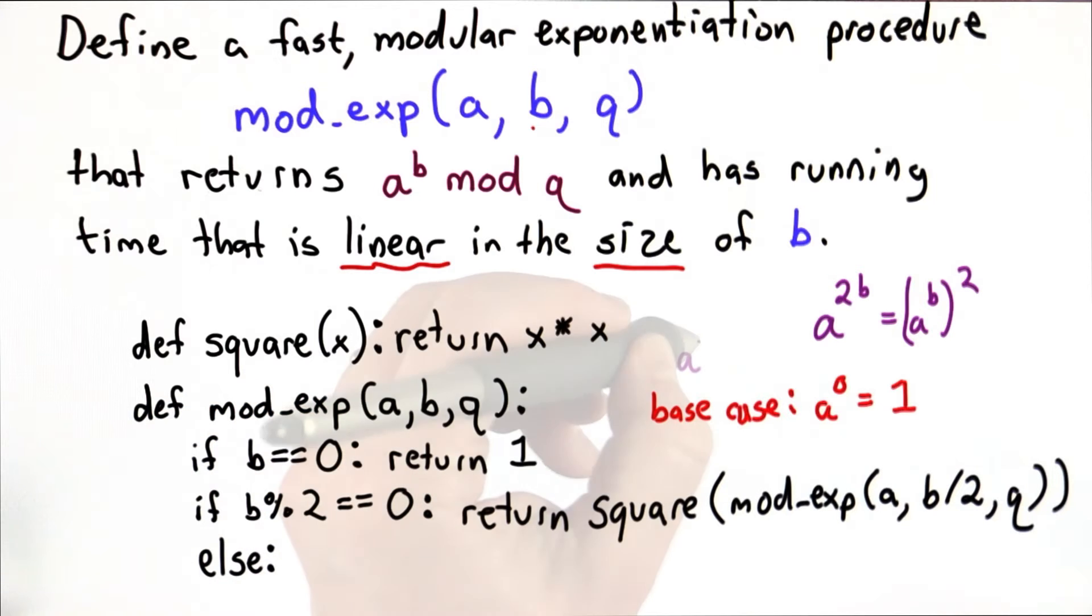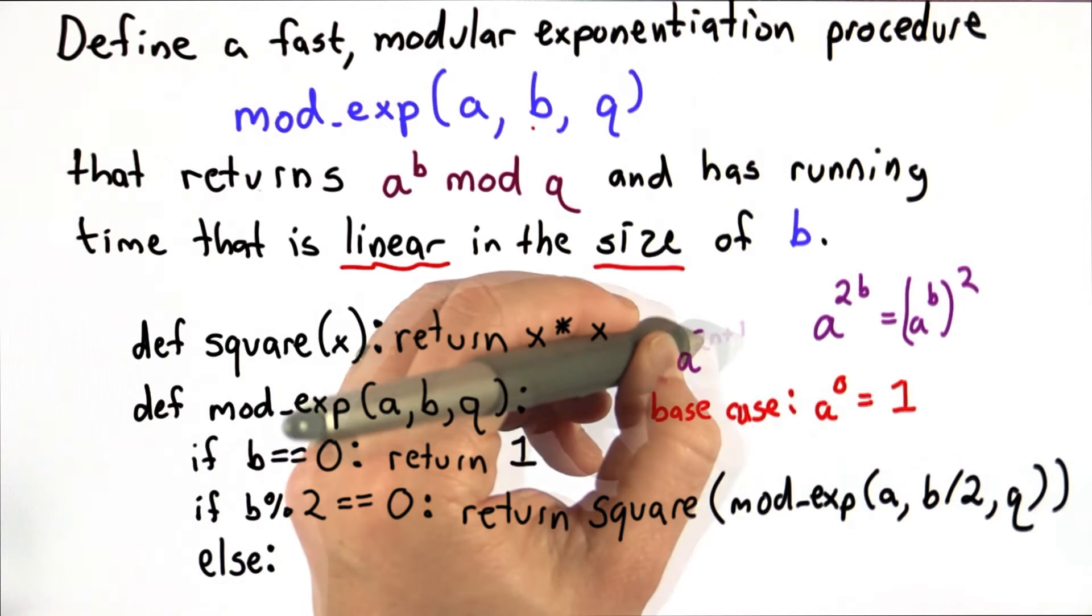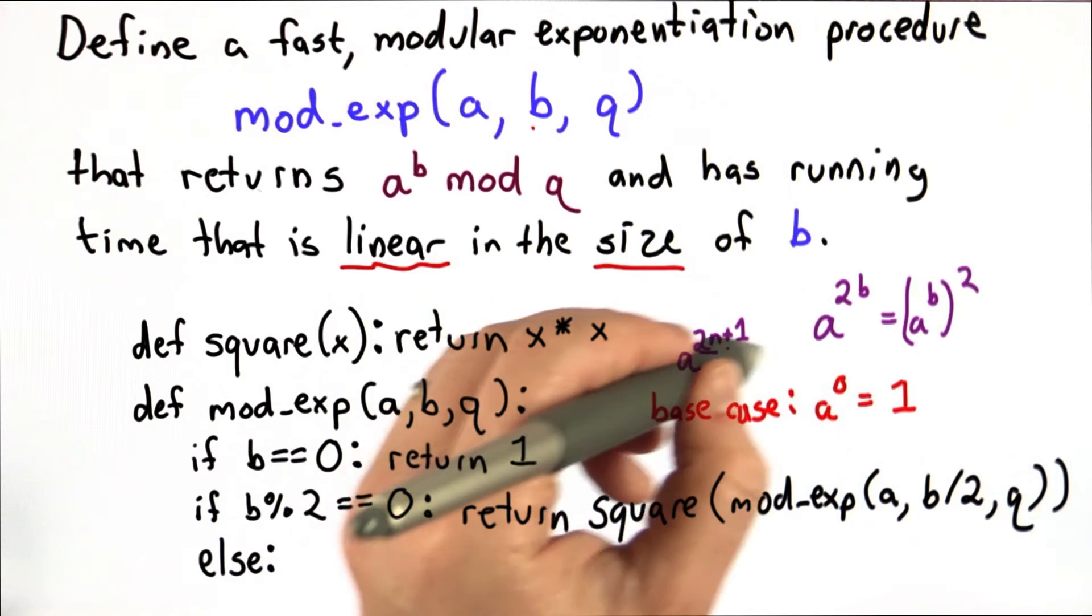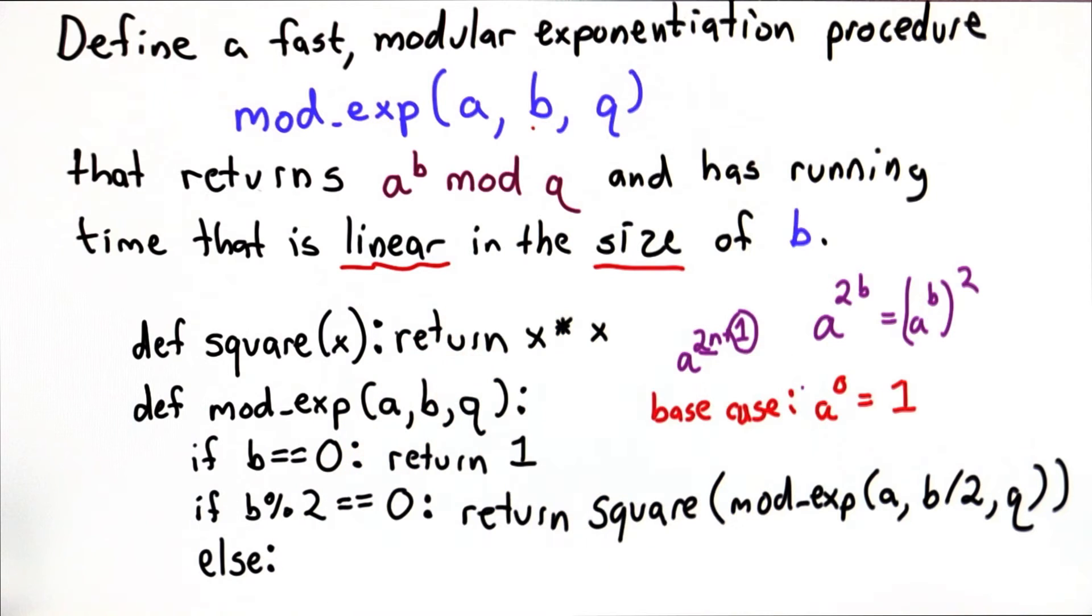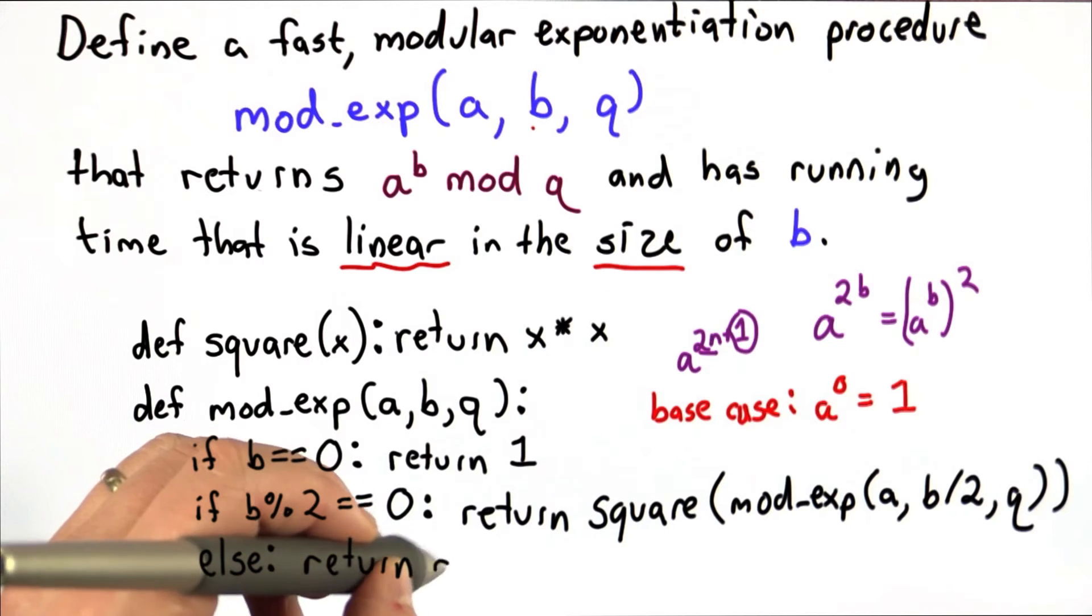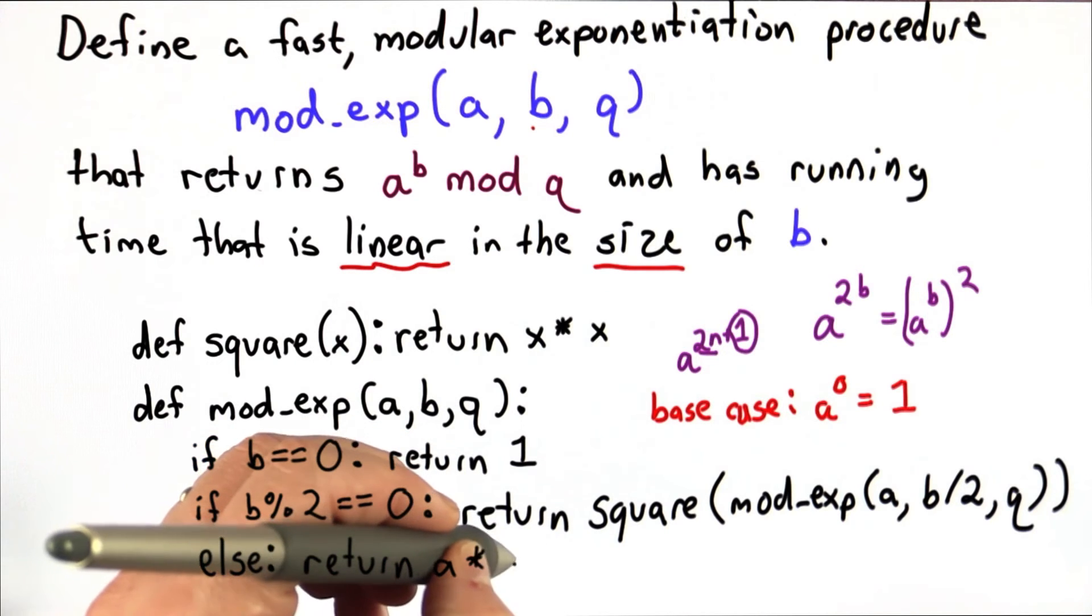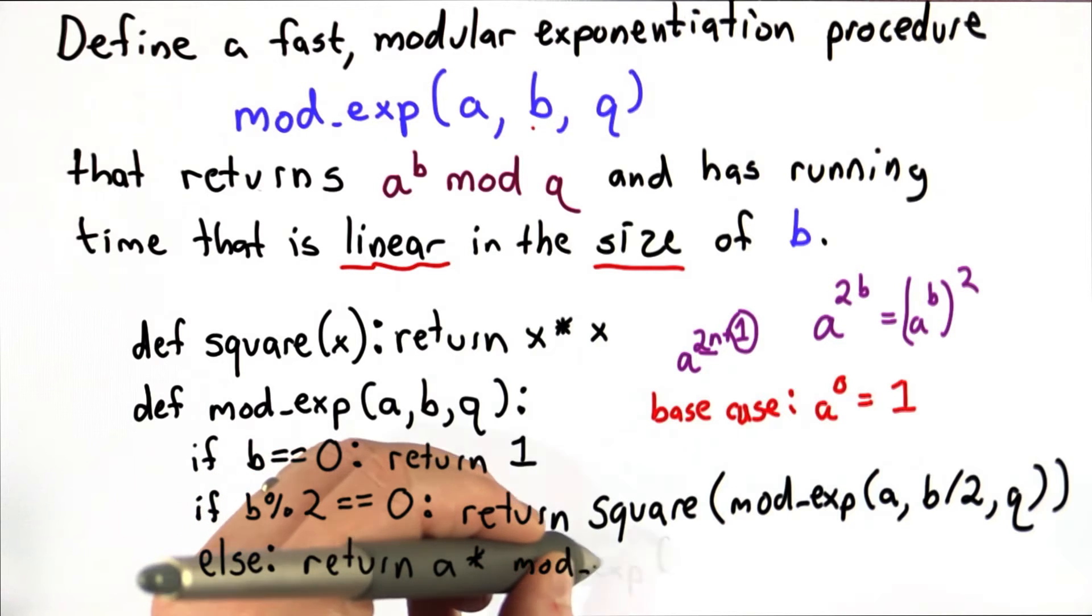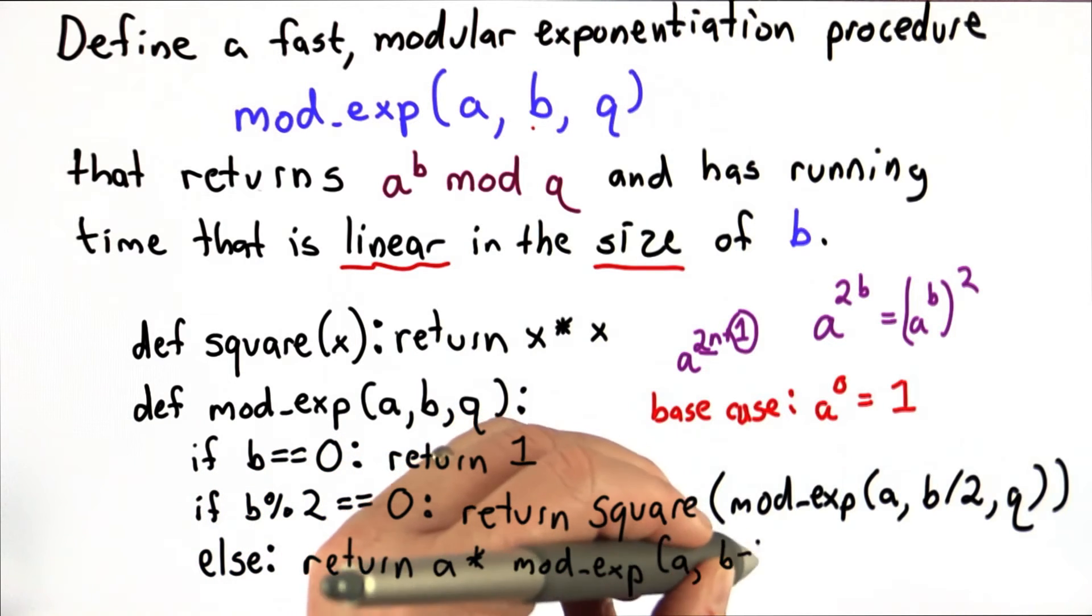If b is not divisible by 2, well then it's of the form 2n plus 1 for some n. So if we break off the 1, we'll end up with something divisible by 2. So that means we can return the result of multiplying a times the result of modular exponentiation, a raised to the b minus 1 power.